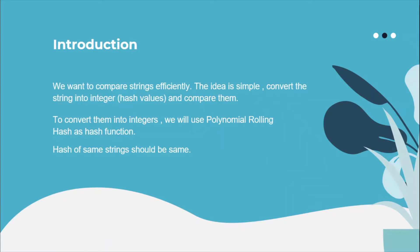Basically, we'll be using polynomial rolling hashes to calculate hash values of a string. In this lecture, we are going to study polynomial rolling hashes, their implementation in C++, and how this works.